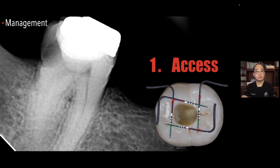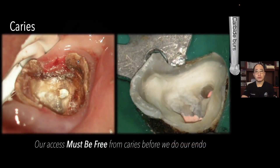The most important part of managing root canal dilacerations is how we can manage them. In any endodontic procedure, the first step is to create an access cavity. The most important thing about the access cavity is caries removal — the caries must be completely removed before we start our endodontic procedure. I use burs in low speed to remove all caries until I can see healthy tooth structure before I carry on.